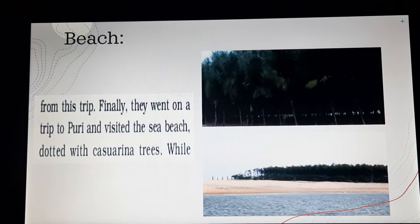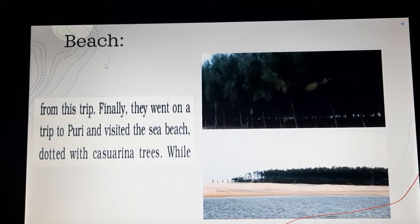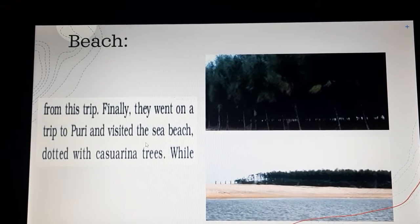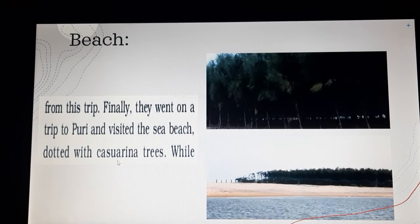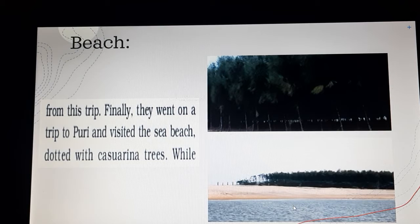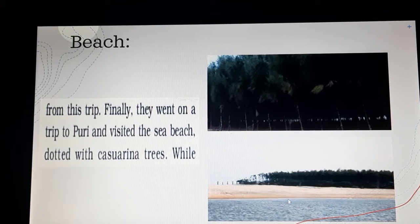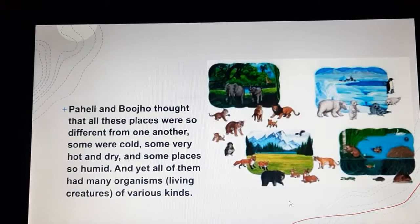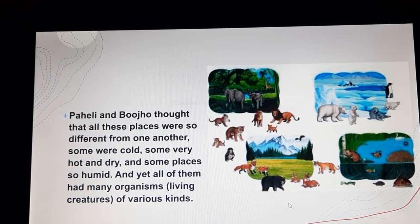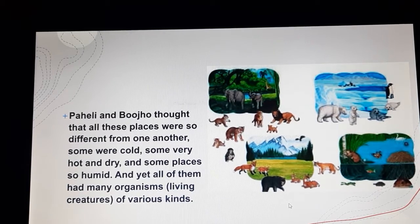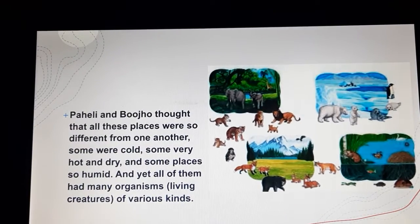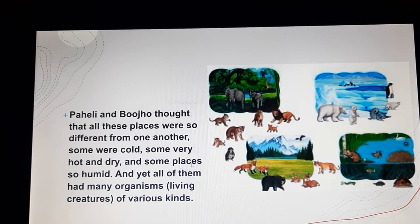The third landscape was a beach. Finally they went on a trip to Puri and visited a sea beach dotted with cassiorina trees. This way you can see that all these landscapes look different from one another, and yet in all of them there are living organisms which live there.